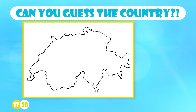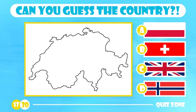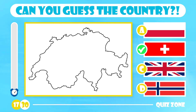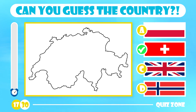Can you guess this one? Is it Poland, Switzerland, the United Kingdom or Norway? The answer is Switzerland, located in western-central Europe, bordering Italy to the south, France to the west, Germany to the north and Austria and Liechtenstein to the east. Geneva and Zurich are the two largest cities in the country.